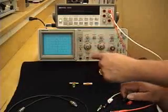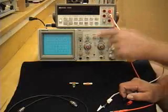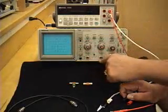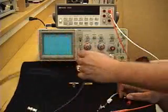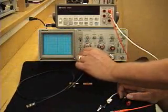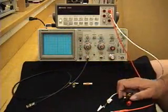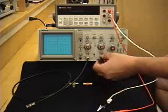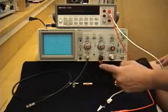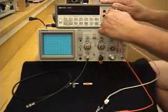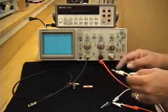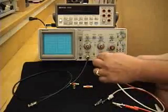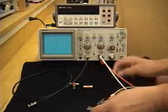The oscilloscope does not have two banana connector inputs. It has BNC inputs and this requires the use either of a BNC cable as indicated there or a BNC to double banana converter which allows us to convert from the BNC to the double banana.